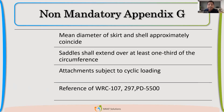We also find the reference of WRC 107 and WRC 297 here. We always wonder where the code is calling WRC 107. We always think it is coming from Section 8 Division 2, but in Division 1 also it is mentioned that if we have a local loading, we should refer to WRC 107, WRC 297, or PD 5500, which is a British code that gives a similar requirement to calculate the local stresses.